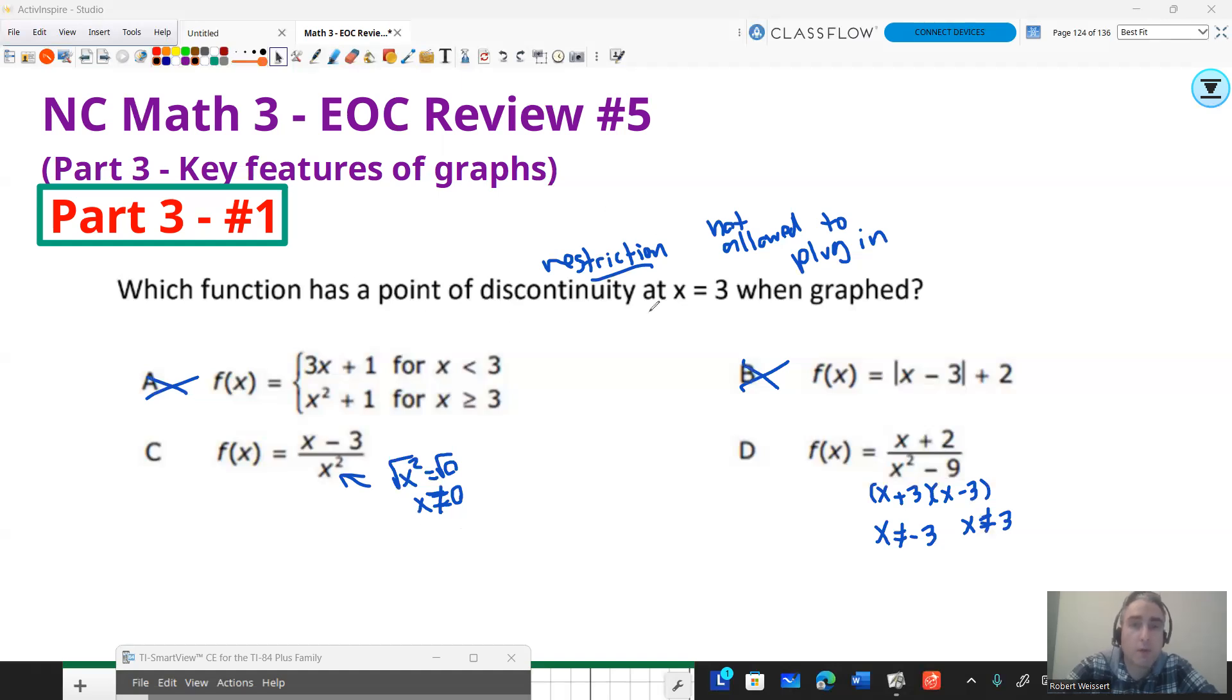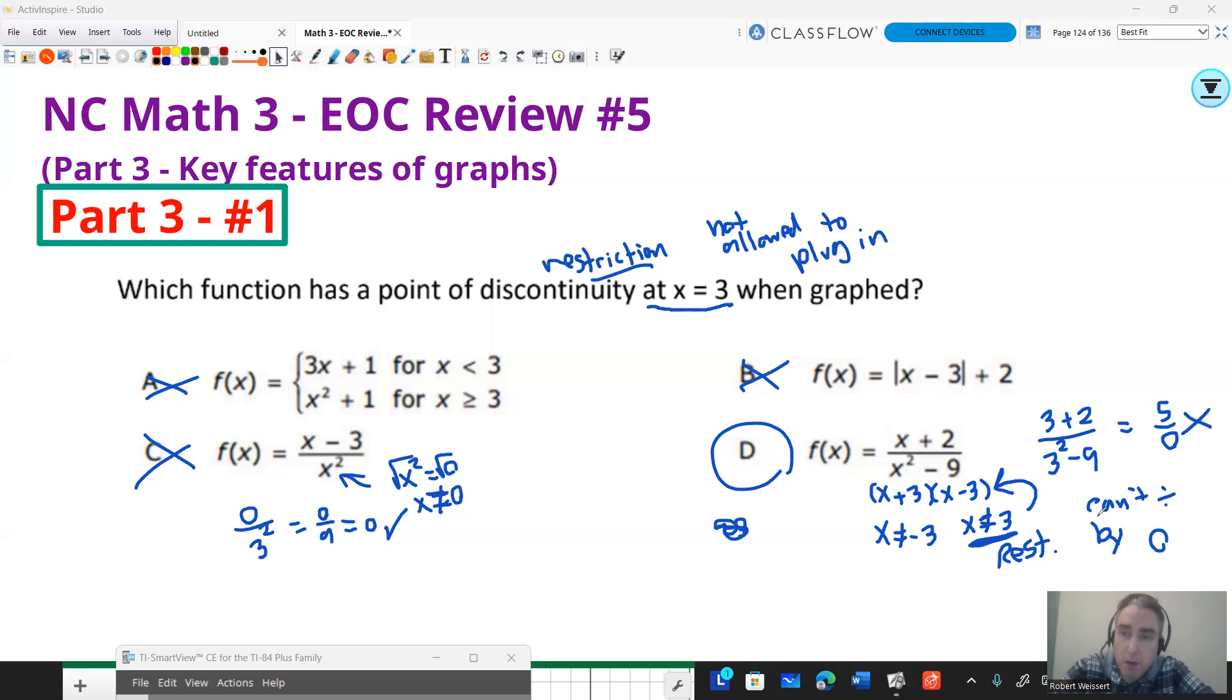Both of those numbers are points of discontinuity. Now, it says which function has a point of discontinuity at x equals three? Well, because x equals three happens to be this restriction, then the answer is going to be D. So C has a point of discontinuity, but it's not three. Because you can plug in three to the top and get zero. And you can divide zero by, if I plug in three, that's going to be nine. Zero divided by nine is still zero. That's a legit point. But when I go over here and I plug in positive three, so three plus two over three squared minus nine, that's going to give me five divided by nine minus nine. That's no good. Can't divide by zero.